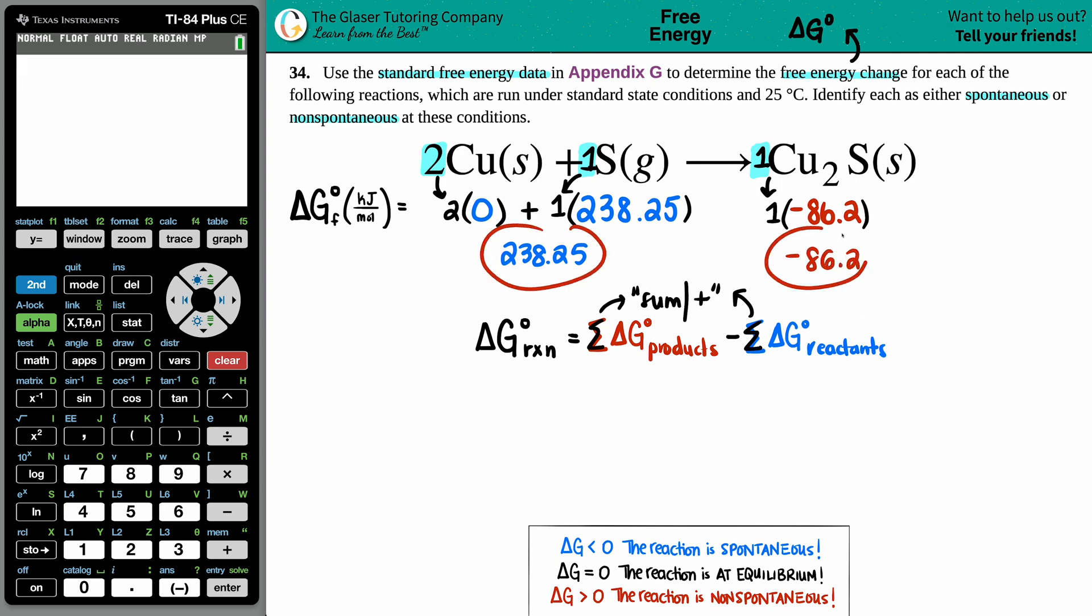Now we have our two values. Let's plug it into our equation. Delta G for the whole entire reaction is products minus reactants: negative 86.2 minus 238.25.